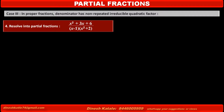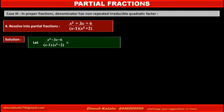Problem 8: Resolve into partial fractions (x² + 3x + 6) / ((x - 1)(x² + 2)). Solution: Let the given fraction be (x² + 3x + 6) / ((x - 1)(x² + 2)). The denominator has two factors: (x - 1), which is a linear factor, and (x² + 2), which is a quadratic factor.